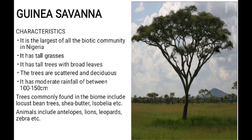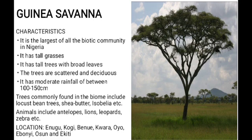Animals found in the Guinea savannah include antelopes, lions, leopards, zebras, and others. Guinea savannah can be found in Enugu, Kogi, Benue, Kwara, Oyo, Ebonyi, Osun, and Ekiti states.